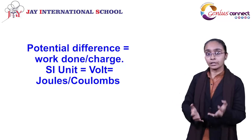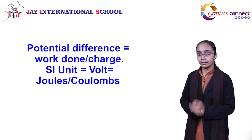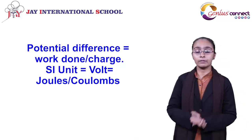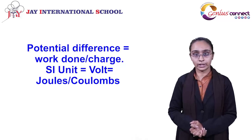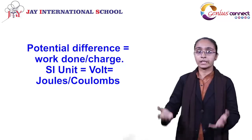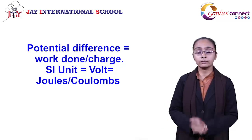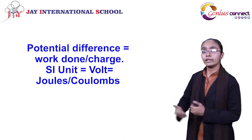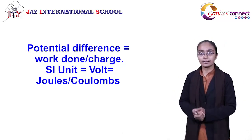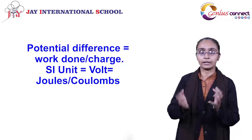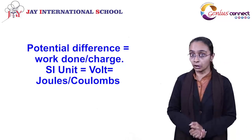Potential difference, as we have understood, is the work done by the particular charge. Work done has the unit of joule, and charge has the unit of coulomb. So the unit given by scientists for potential difference is the volt.